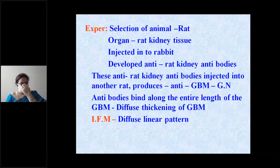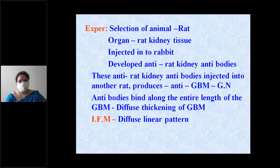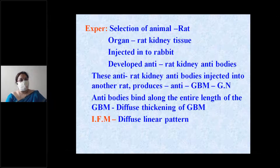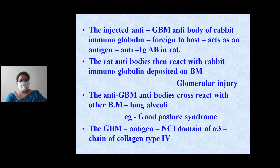On immunofluorescence, you see a diffuse linear pattern of deposition of antibodies — a diffuse linear pattern of deposition of these antibodies along the glomeruli.